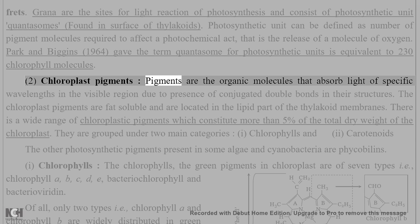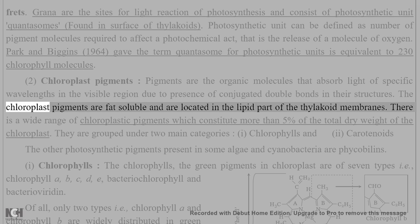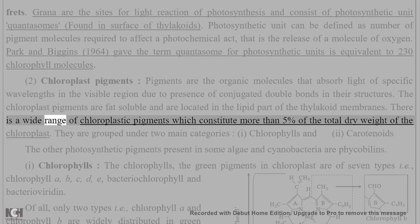Pigments are organic molecules that absorb light of specific wavelengths in the visible region, due to the presence of conjugated double bonds in their structures. The chloroplast pigments are fat-soluble and are located in the lipid part of the thylakoid membranes. There is a wide range of chloroplastic pigments which constitute more than five percent of the total dry weight of the chloroplast.